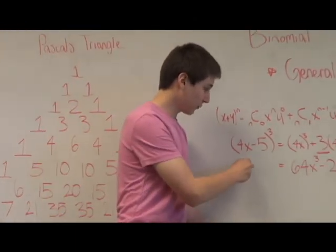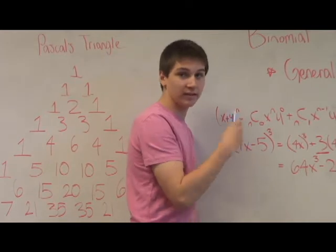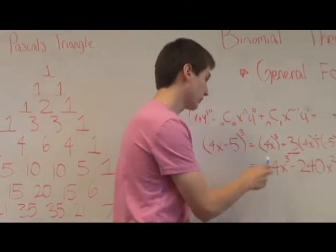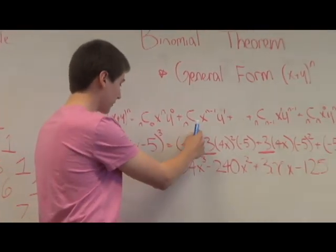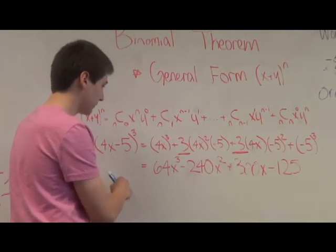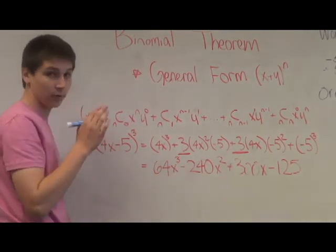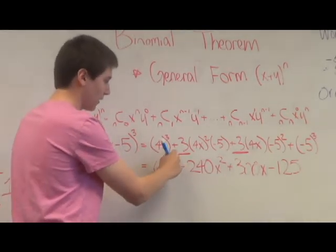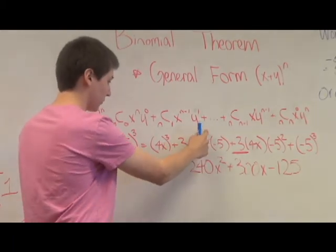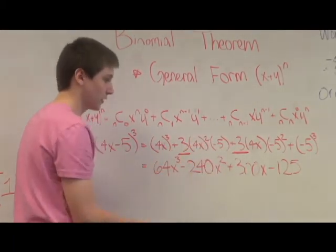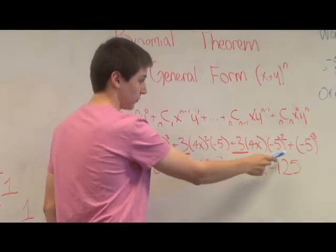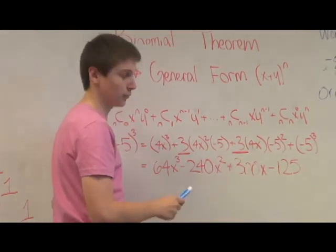Now in this final example, four x minus five to the third, we can see how this all is related together. So we take the first term, four x to the third, and then negative five to the zero, so it'll just be one, so it cancels out, plus three times four x squared, then negative five to the first, three times four x to the one, negative five squared, then plus negative five cubed.